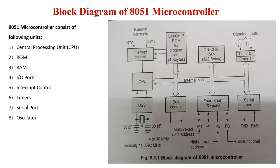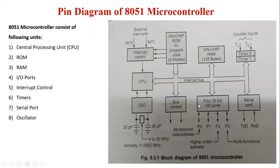The first block is the central processing unit. The CPU monitors and controls all the operations performed by the microcontroller. The CPU of the 8051 consists of an 8-bit arithmetic and logic unit with associated registers like A, B, PSW, and SP, a 16-bit program counter, and a data pointer register. Along with these it has a set of special function registers and a control unit.